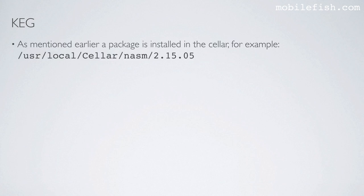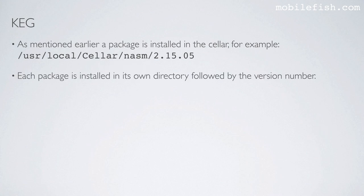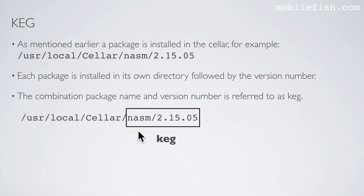Now I will explain the term keg. As mentioned earlier, a package is installed in a cellar. Each package is installed in its own directory, as you can see, followed by the version number. The combination of package name and version number is referred to as a keg.